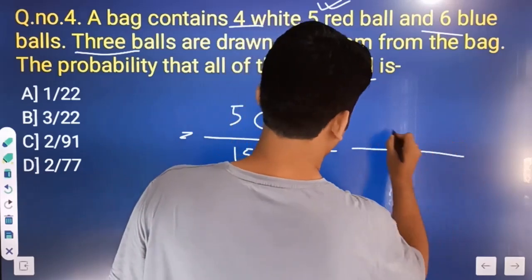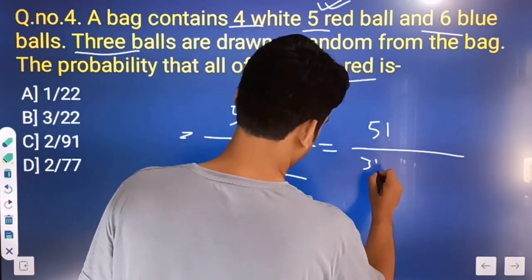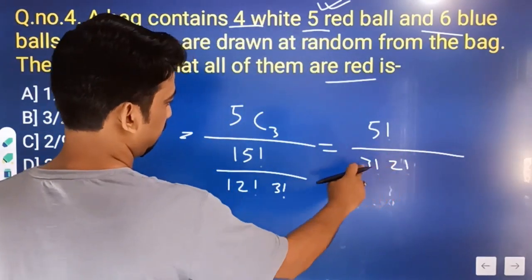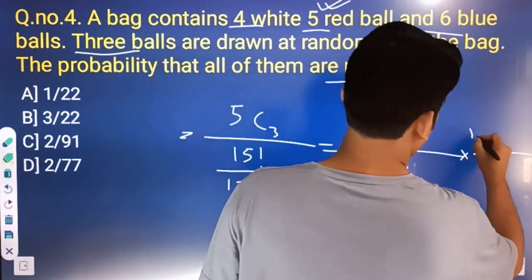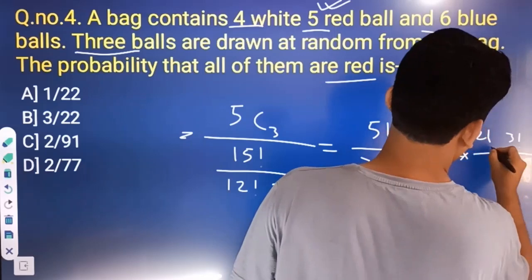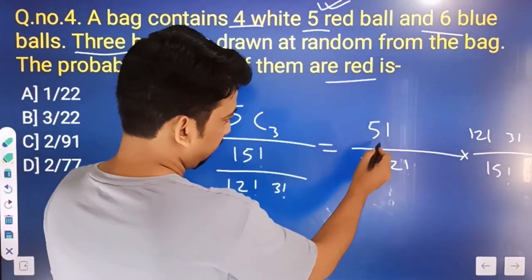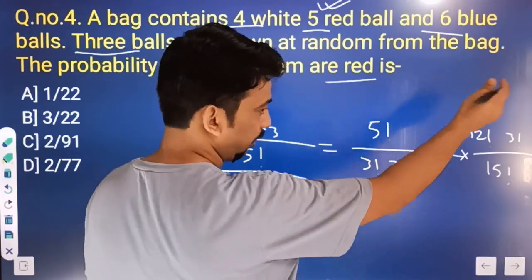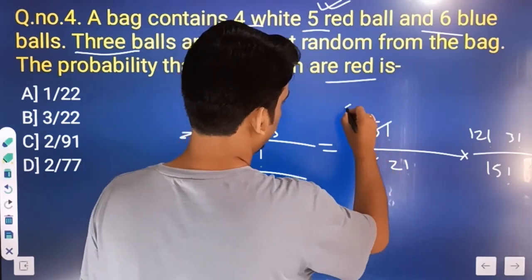Equal to: 5 factorial divided by 2 factorial into 2 factorial, over 12 factorial divided into 15 factorial. We simplify: 5 factorial gives 5 into 4 into 3 factorial; 3 factorial cancels. So 5 into 4 divided by 2, giving us the answer as 2 by 91.